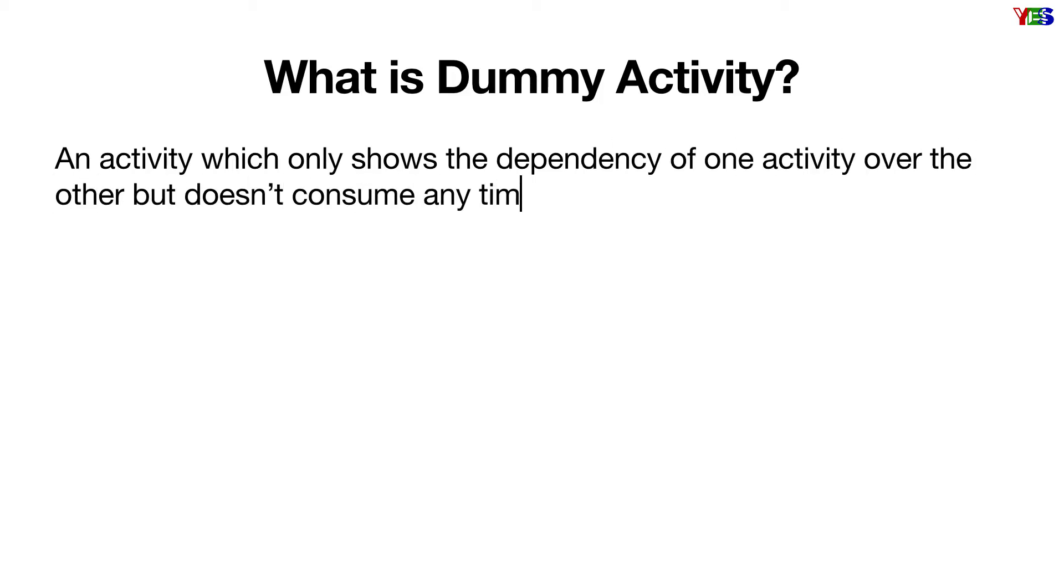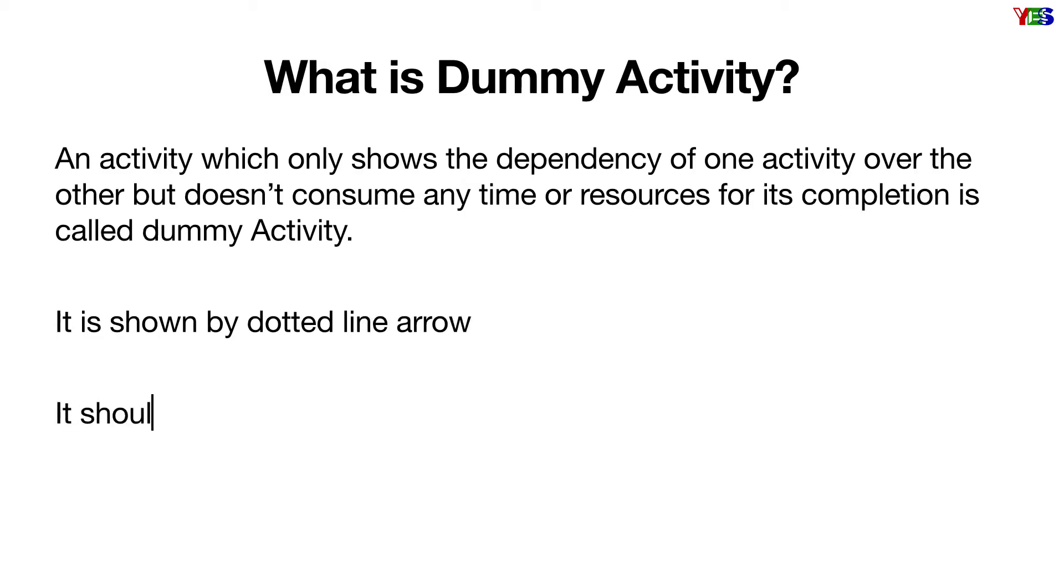any time or resources for its completion is called dummy activity. In the network diagram it is shown by dotted line arrow, and one of the rules of network diagram is it should only be used if it is very necessary.